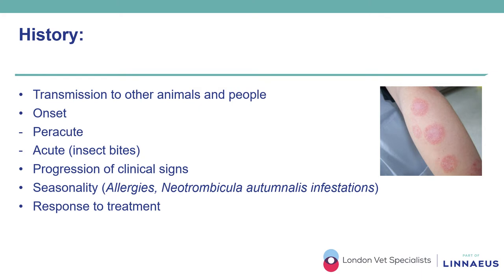Other characteristics that are very important include the type of onset — for example, acute or peracute onset.